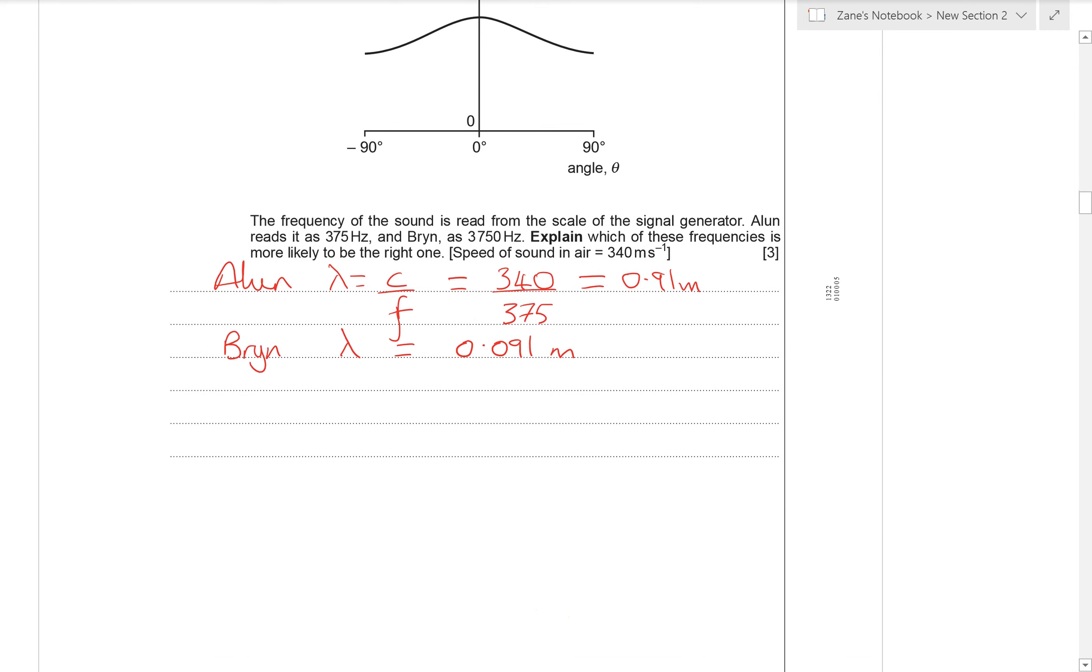Remember what we said that the wavelength needs to be larger than the size of the gap. Alan's wavelength is, Bryn's isn't. So Alan is correct because his wavelength is greater than the 0.3 meter gap.